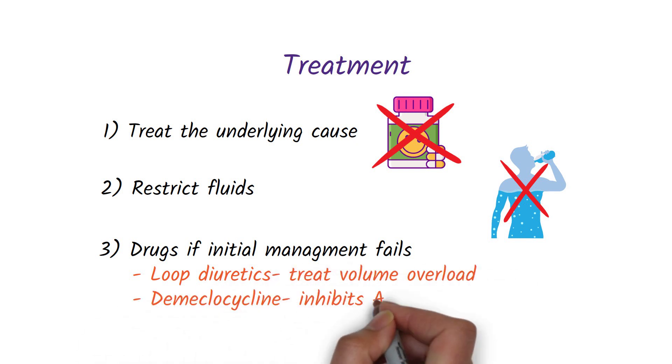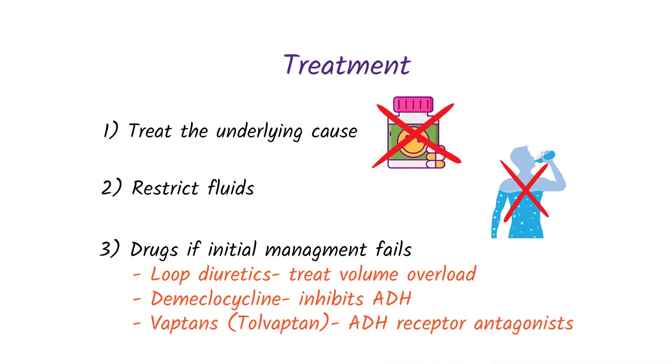Demeclocycline, a drug that inhibits ADH, and vaptans like tolvaptan, which are ADH receptor antagonists, if initial measures fail.